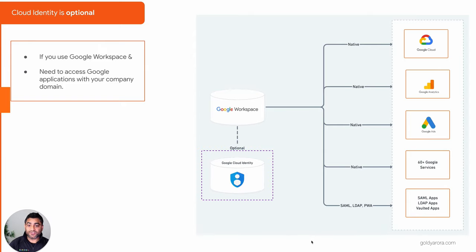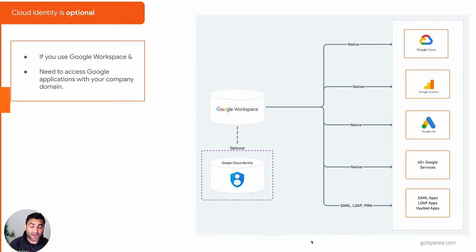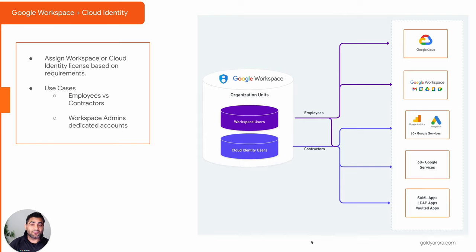Now let's talk about the second scenario where Cloud Identity is optional. If these two conditions are met, then Cloud Identity is optional: number one, you plan to use Google offerings for your business, and number two, you already have Google Workspace set up for your messaging and collaboration. If that's the case, you do not need Cloud Identity — it is optional. And there are a few use cases where Google Cloud Identity and Google Workspace can work together.